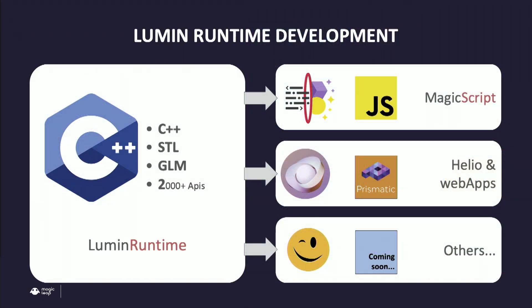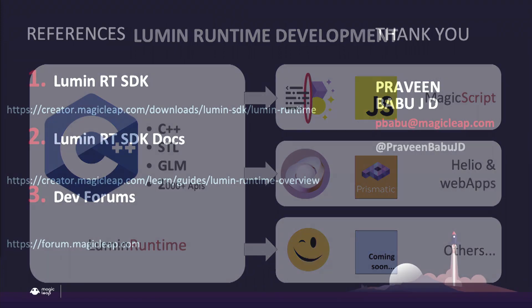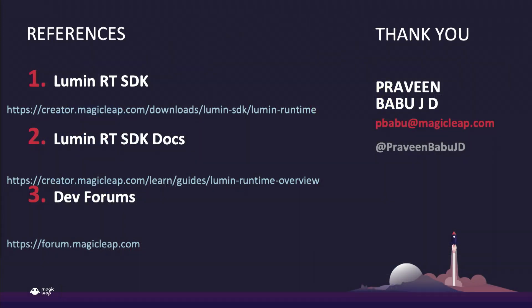How would you go about developing Lumen Runtime apps? The primary language is C++ — the native Lumen Runtime APIs are in C++. MagicScript was our first extension, putting JavaScript on top of it. If you're more from the web field, Helio web apps brings in Prismatic, and there are others coming soon. Thank you — my name is Praveen, and all the resources are here for you to look up.